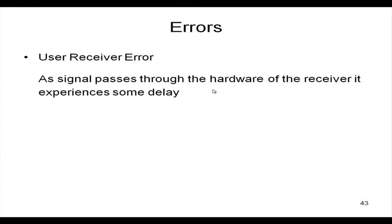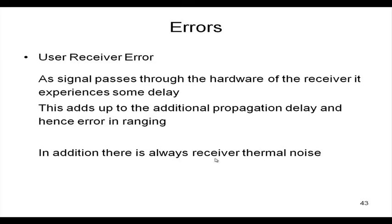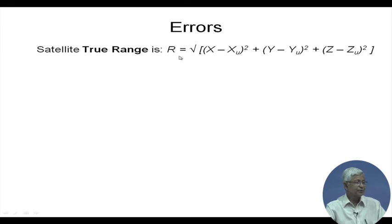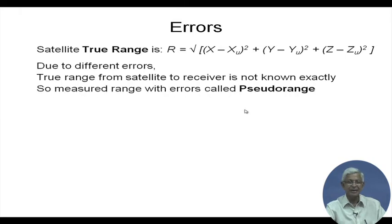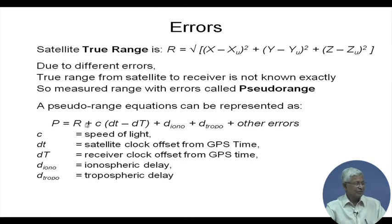As the signal passes through the hardware from antenna to the actual processing, the receiver experiences some delay, adding additional propagation delay and hence error in ranging. There is also receiver thermal noise to be considered. The true range is not known exactly due to these errors, so it is called a pseudo-range. The pseudo-range equals the true range R plus clock drift delay, ionospheric error, tropospheric error, and all other errors combined.